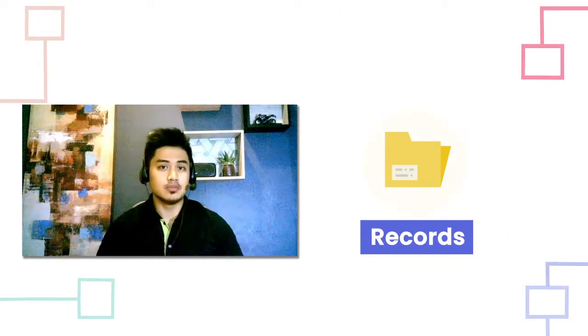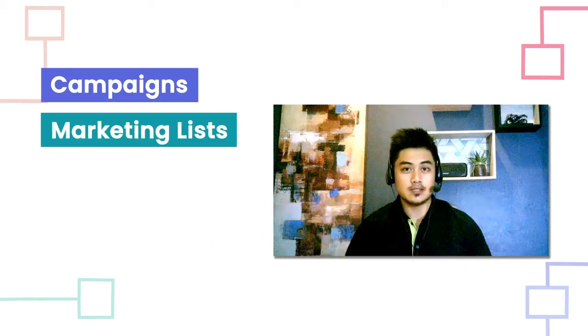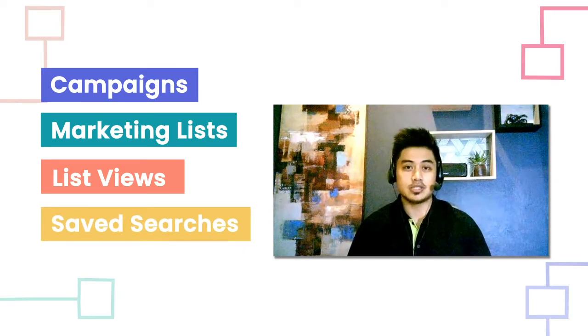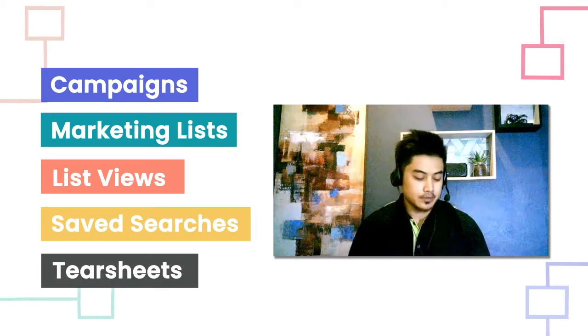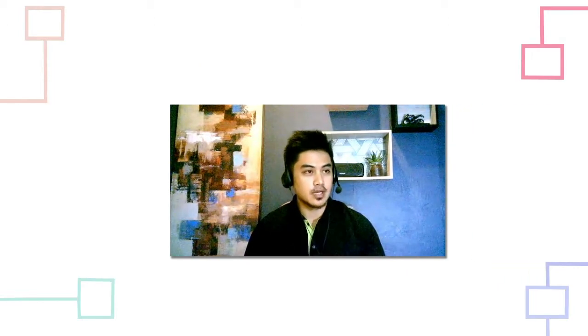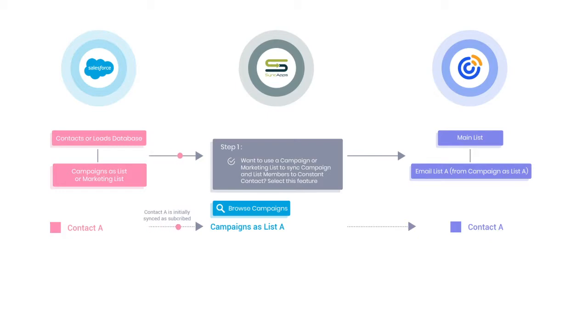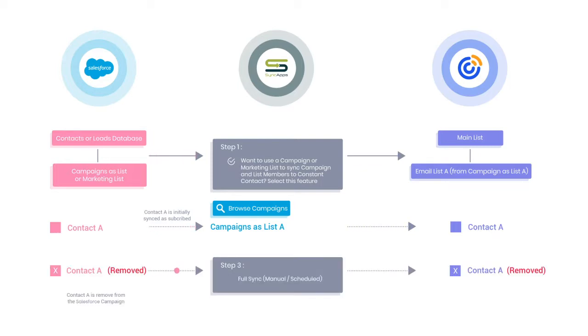The function of Full Sync is that we will automatically remove records from your matching email marketing software list if they are removed from that CRM campaigns, marketing list, list view, or saved searches. For example, for Salesforce with Constant Contact, you sync a Salesforce campaign list with thousands of records over to a Constant Contact list. In the future, if you remove a hundred or thousands of records from that list, once you run the integration with Full Sync, we will automatically remove those records from that matching list in your email marketing automation software or Constant Contact.